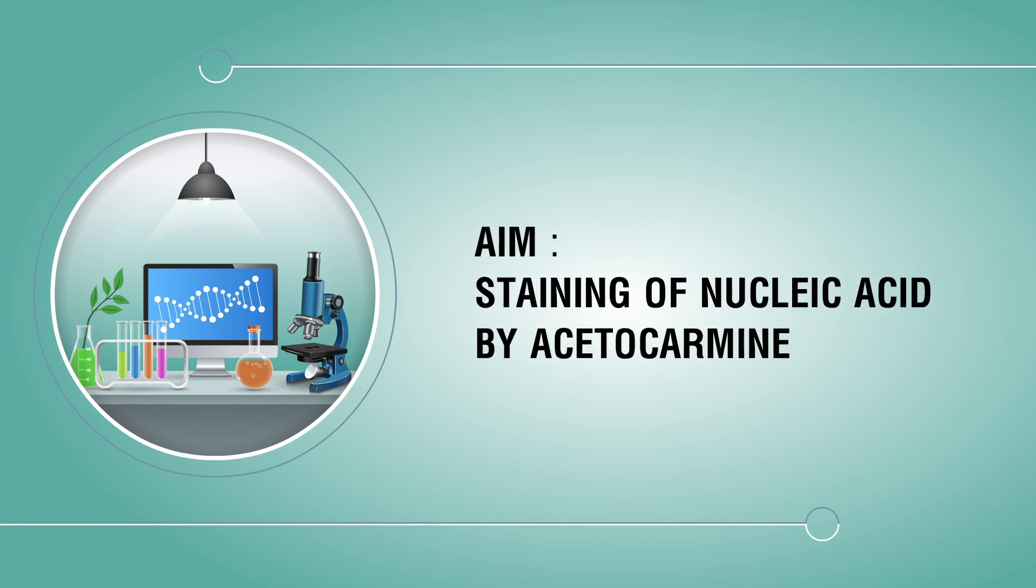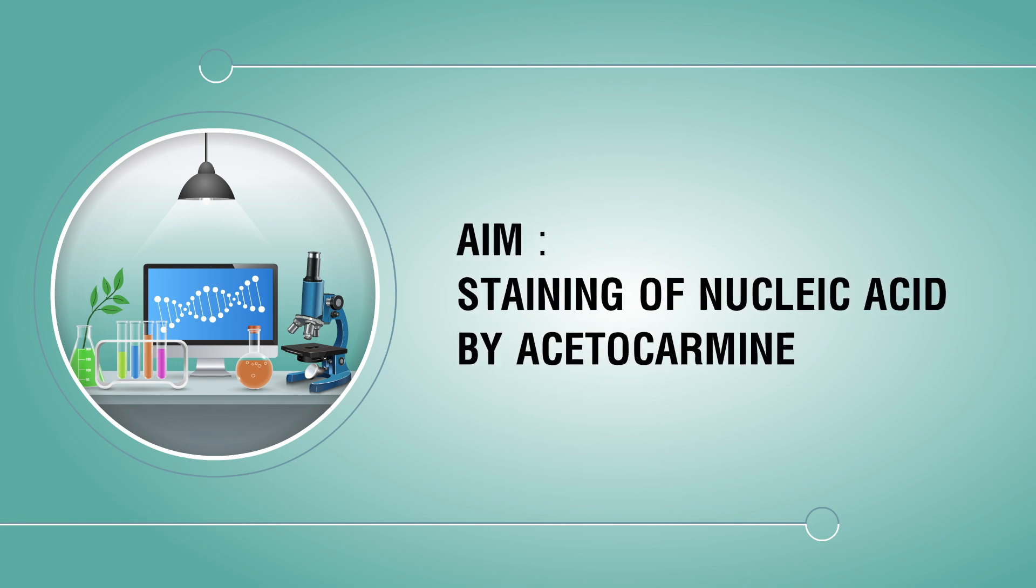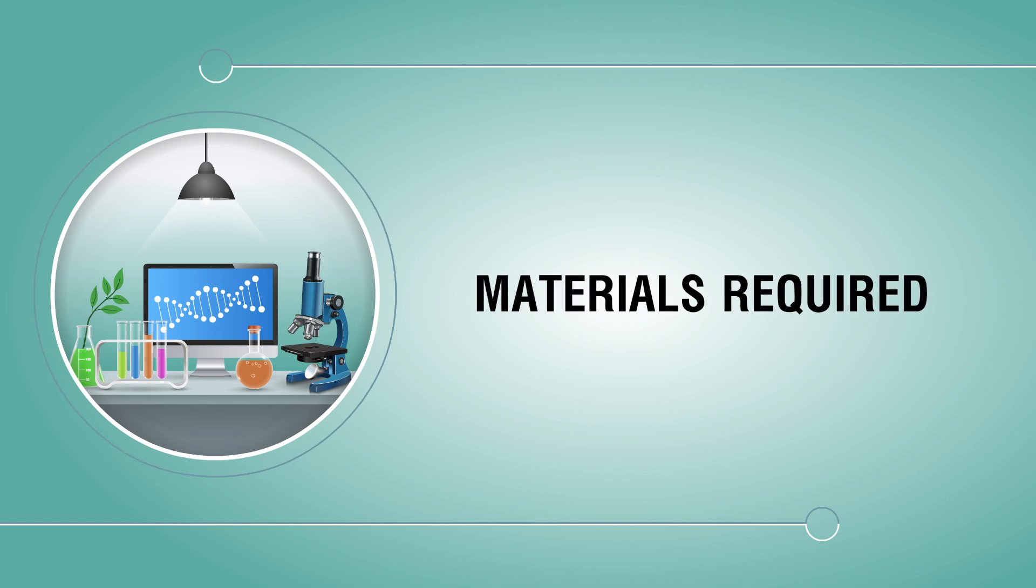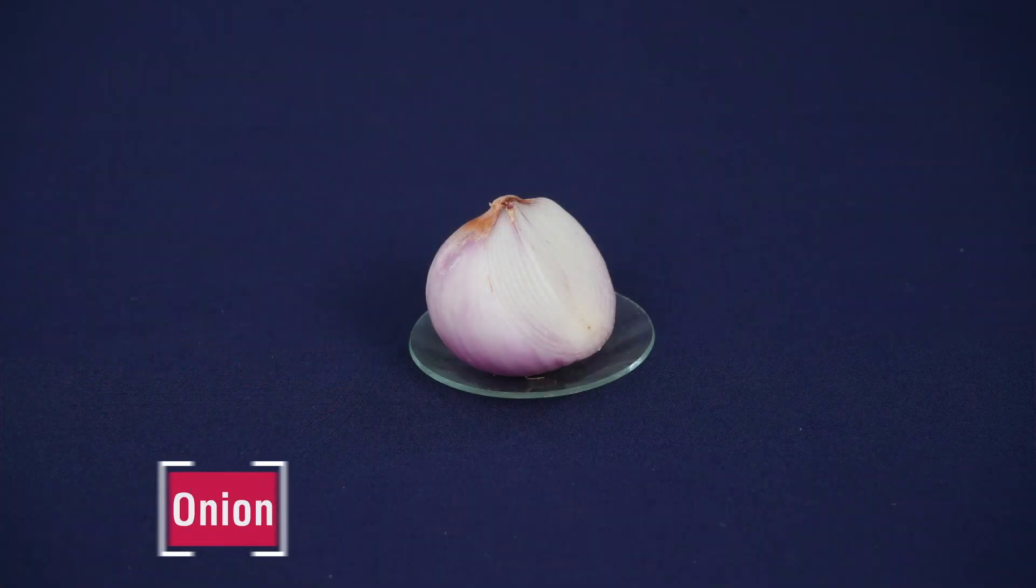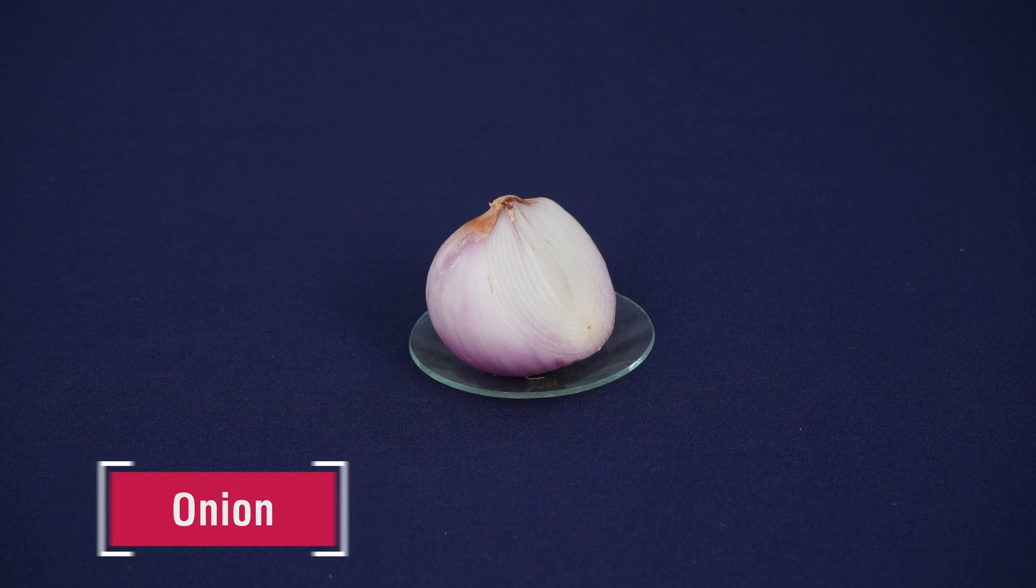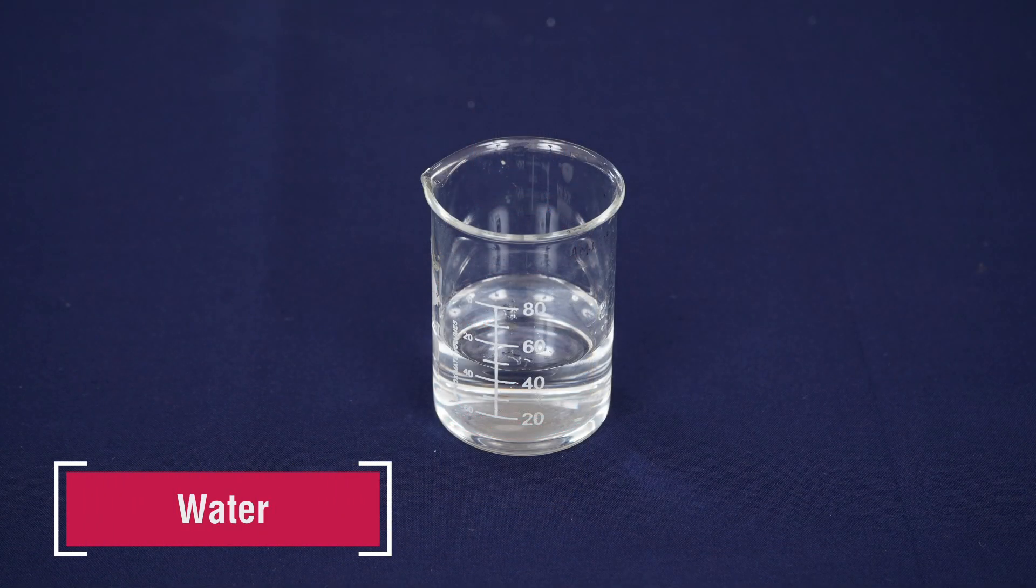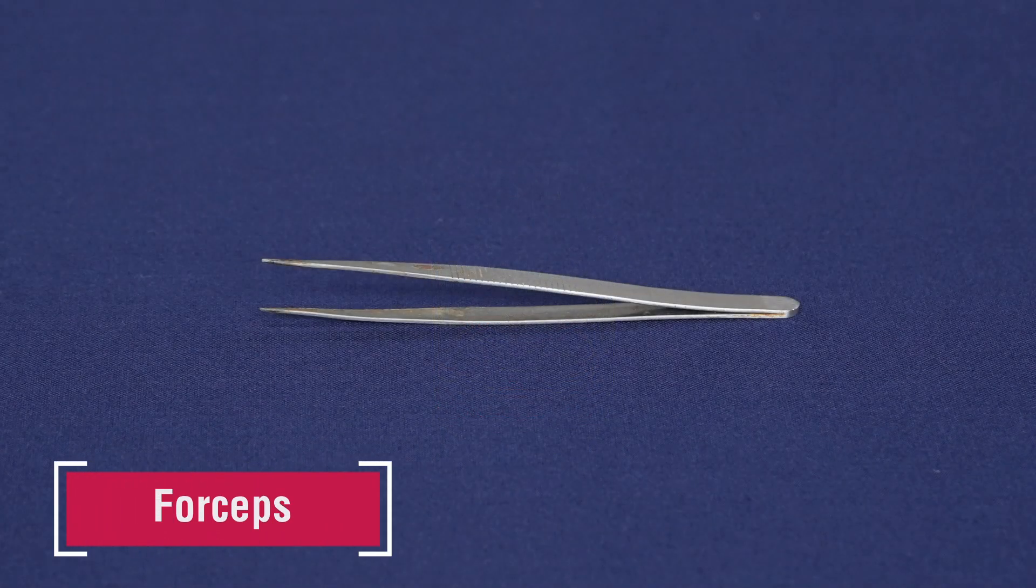Aim: Staining of Nucleic Acid by Acetocarmine. Materials Required: Onion, Acetocarmine Stain Water, Forceps.